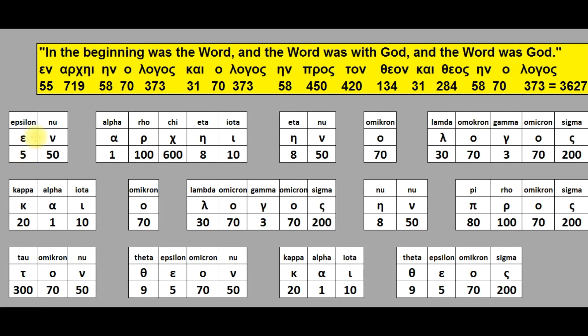In Greek, John 1 verse 1 starts with the same word, in the beginning. In the beginning was the Word, and the Word was with God, and the Word was God, having a sum total Greek letter value of 3,627.